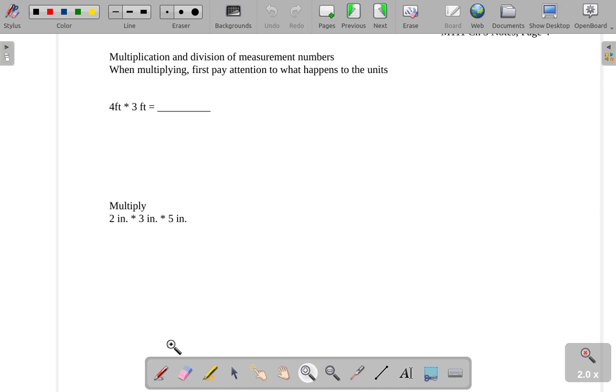Let's look at what happens when we multiply two measurement numbers, and they each have their own units.